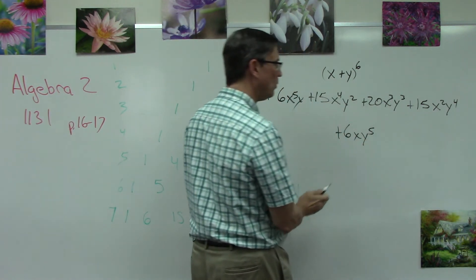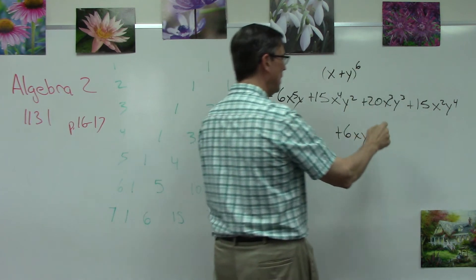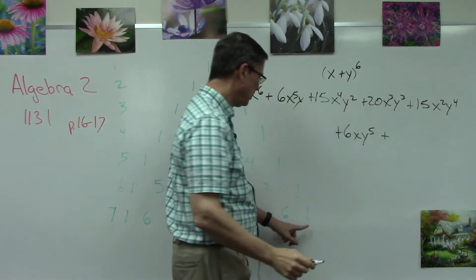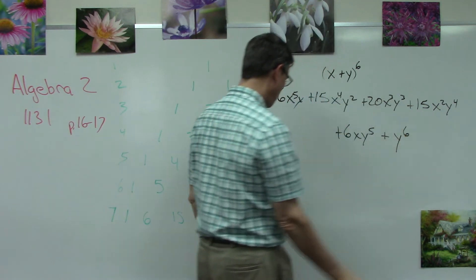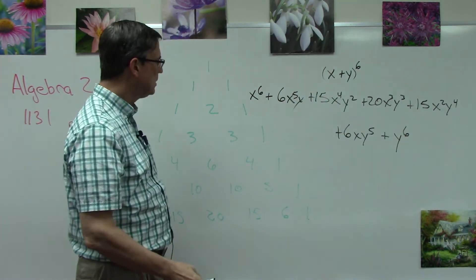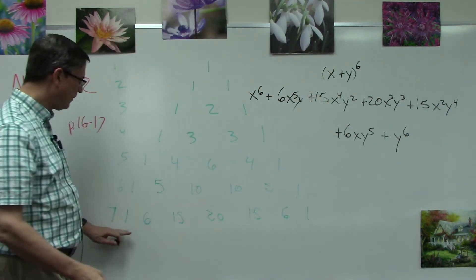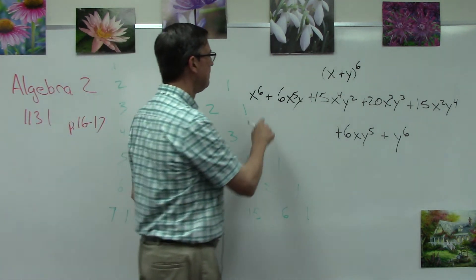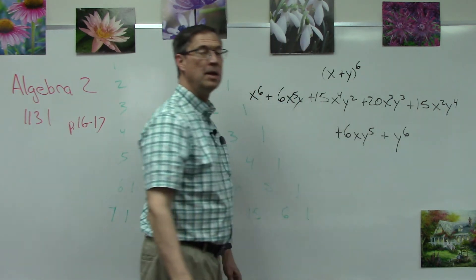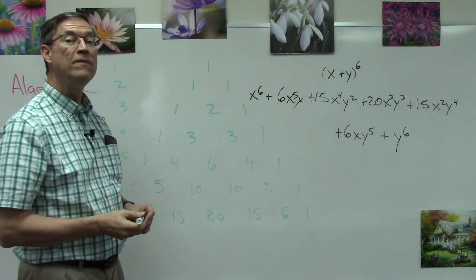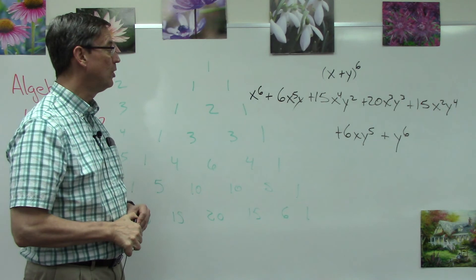And then the last one is just one, y to the sixth power. So these numbers down here on row 7: 1, 6, 15, 20, 15, 6, and 1 again. Those represent the coefficients, the numbers in front.